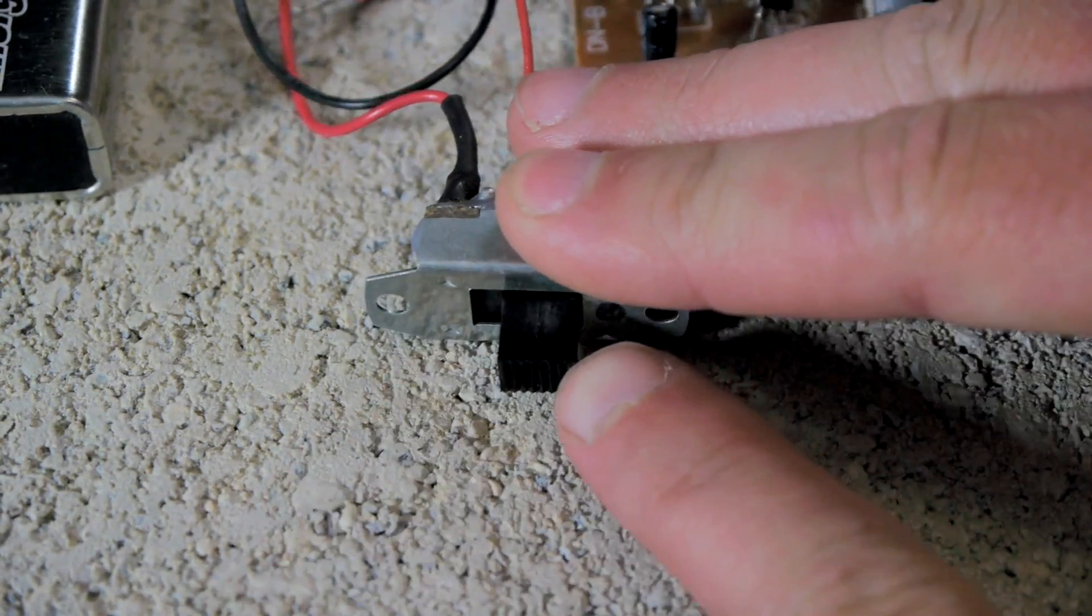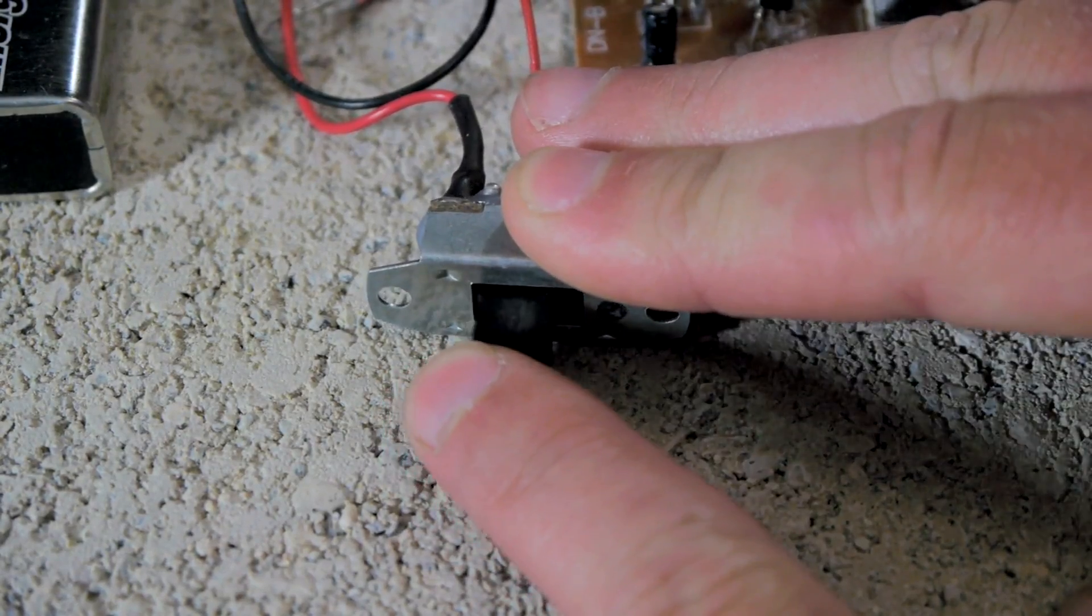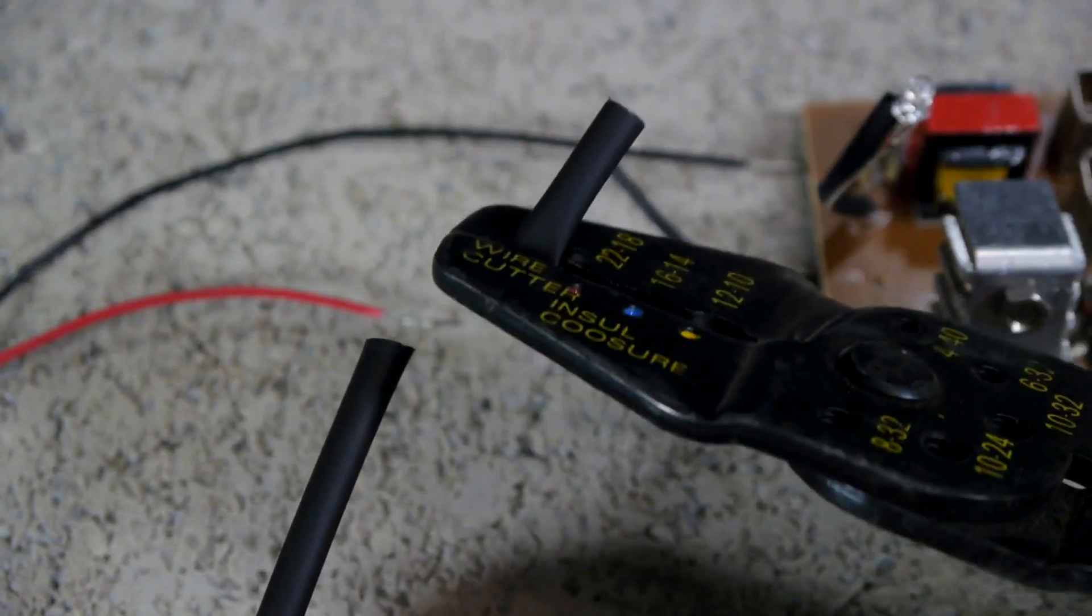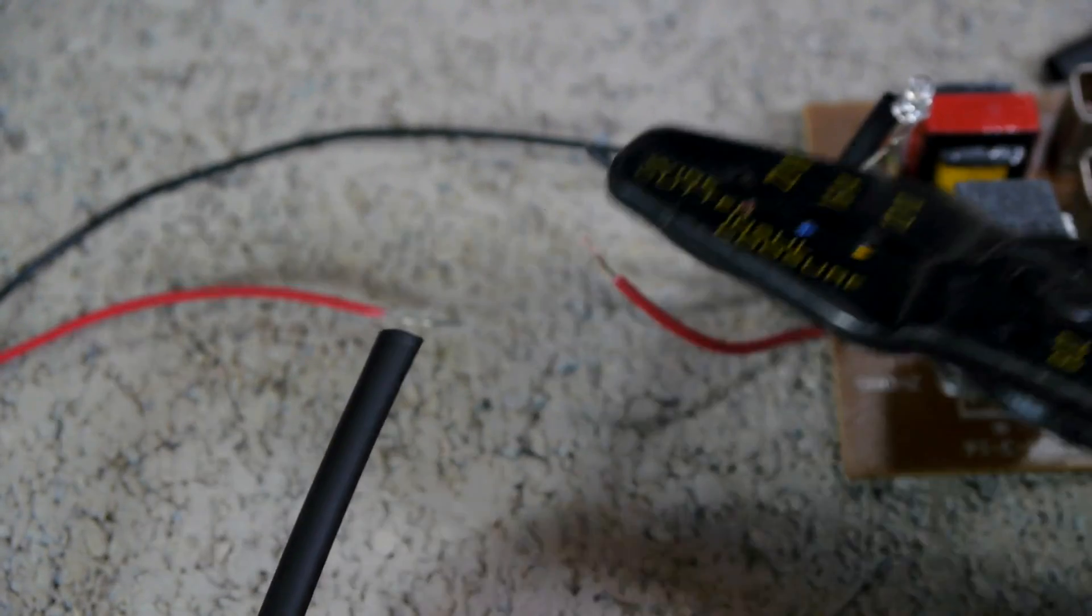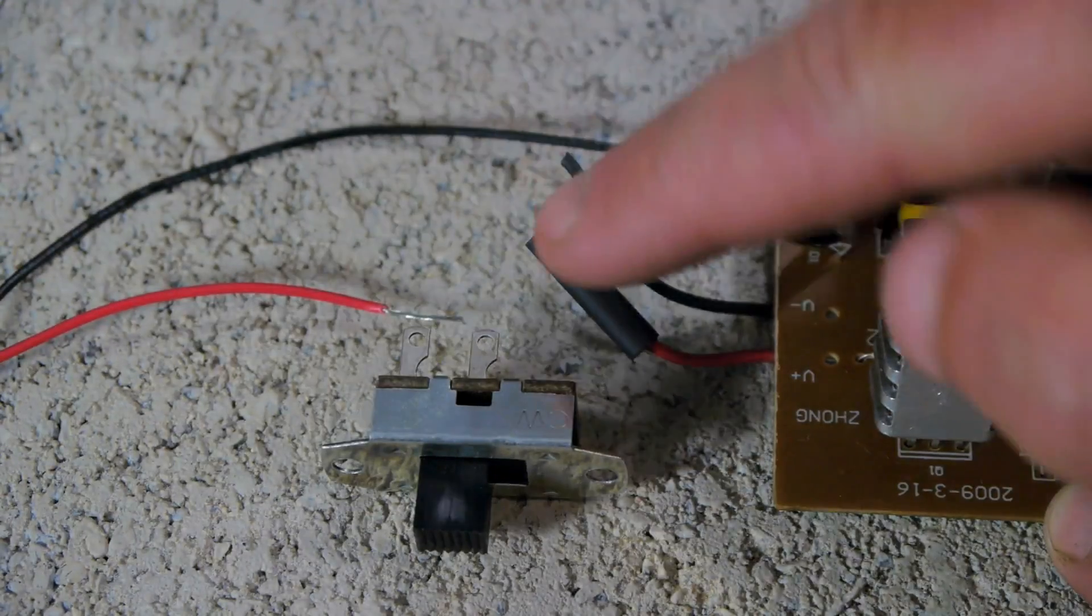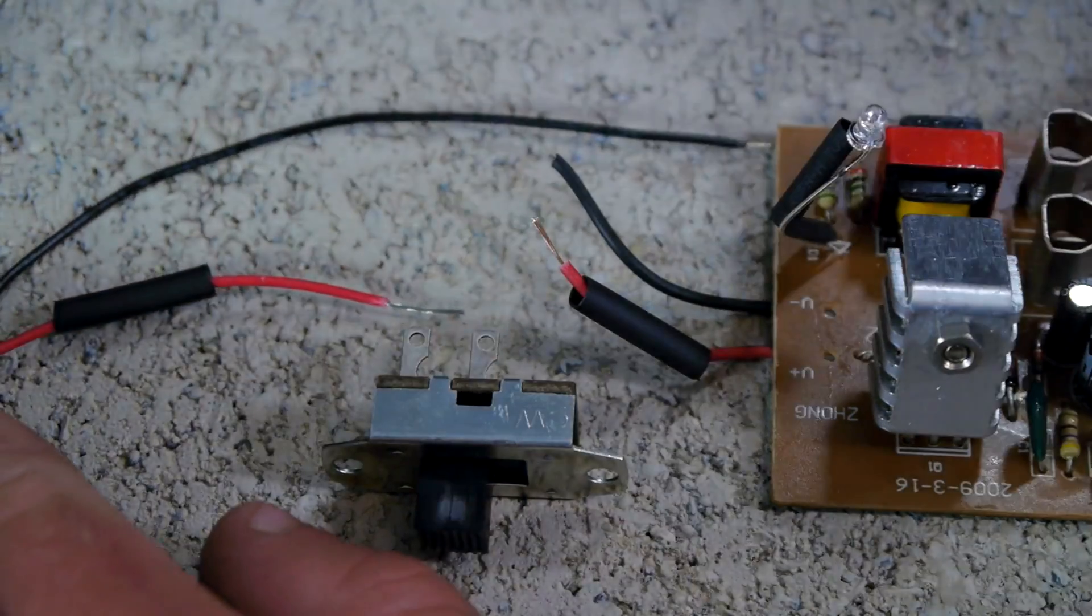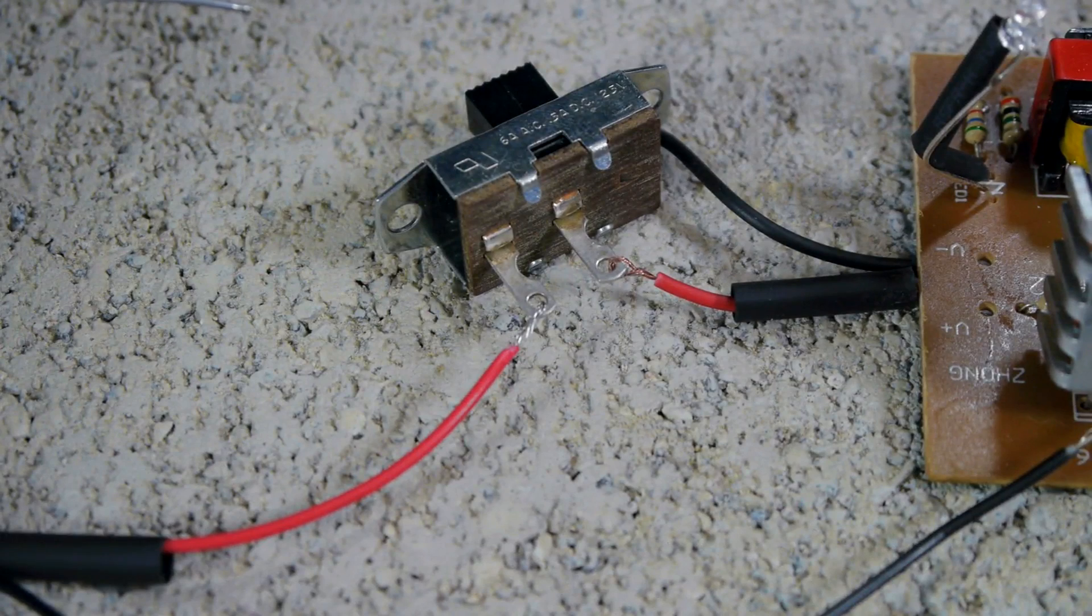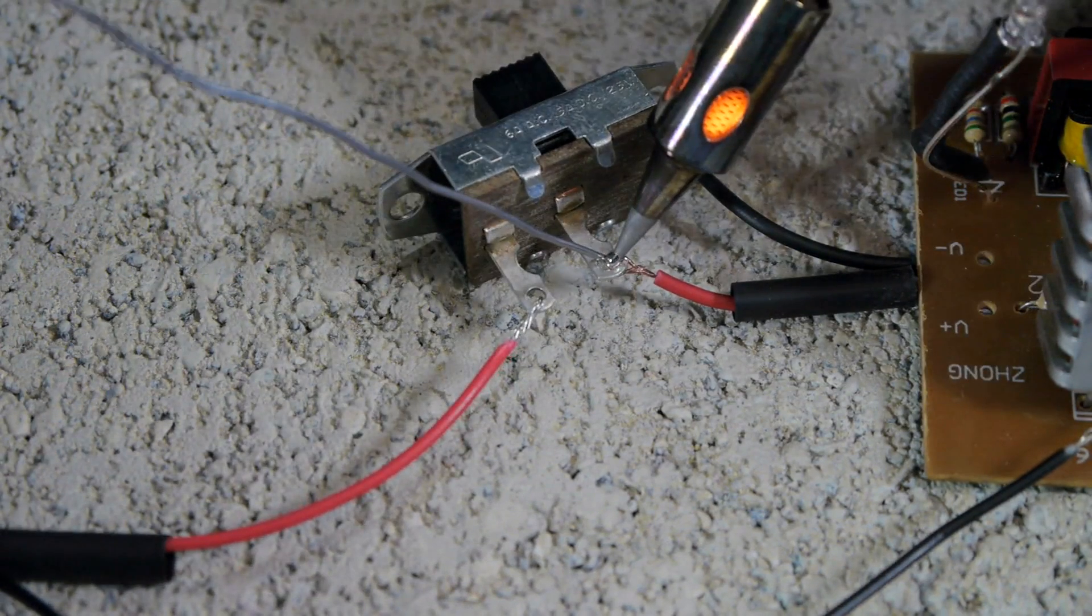The type of switch we will be using for this project is an on-off sliding switch, but any type of on-off switch will work. Before going any further we need to cut a short piece of heat shrink tubing and place it over the end of each red wire. The stripped portion of the wires can now be twisted around each terminal of the switch and soldered into place.